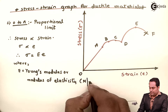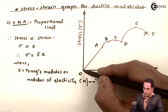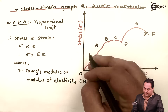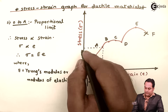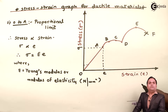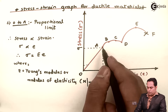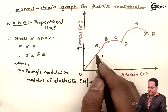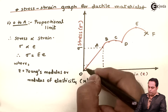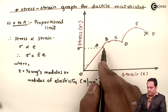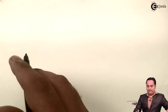Young's modulus has units of Newton per mm². From O to A is the proportional limit. When we reach point A, if we remove the load, stress becomes zero and the object will return back to its original shape — it behaves in an elastic manner. Within the O to A region, the material is elastic and will regain its original shape when the load is removed.